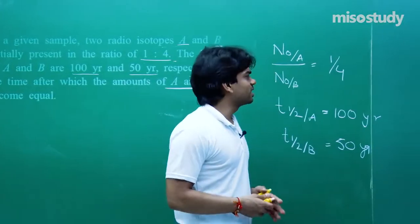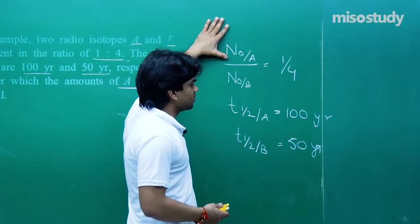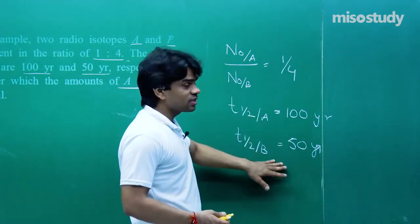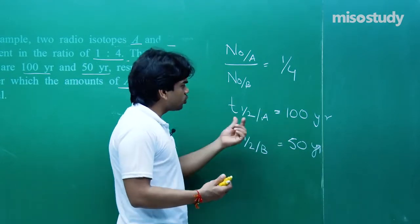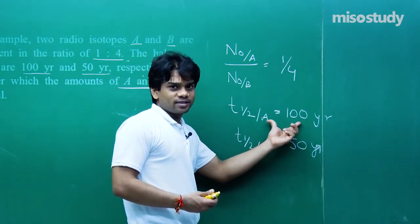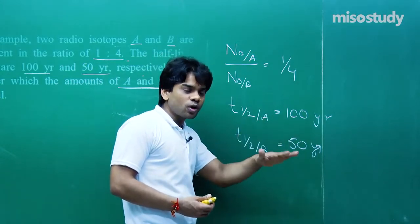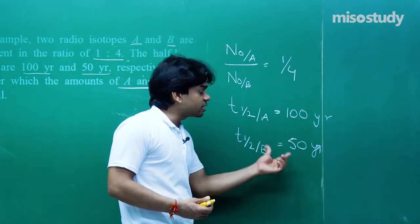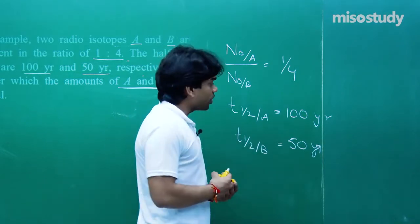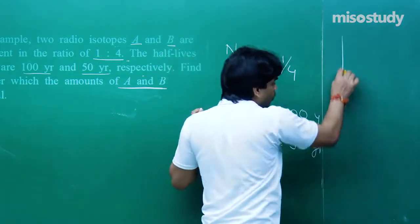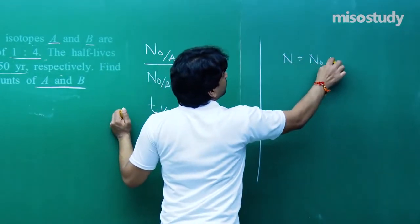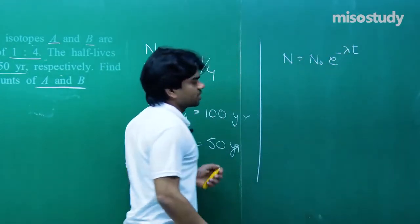After time T, let the number of nuclei of A and B become equal. A is lesser but its half-life is more; B is more but its half-life is less. A will disintegrate at a lower rate — in 100 years it is reduced to half, while B in 50 years is reduced to half, so in 100 years B is reduced to 1/4. Using N equals N-naught e to the power minus lambda-t for both cases.